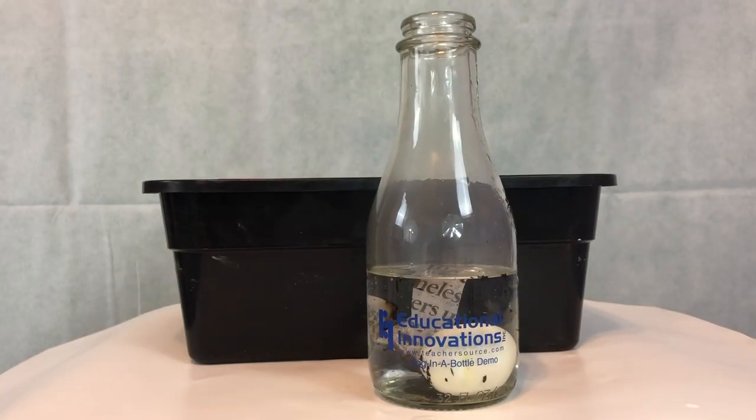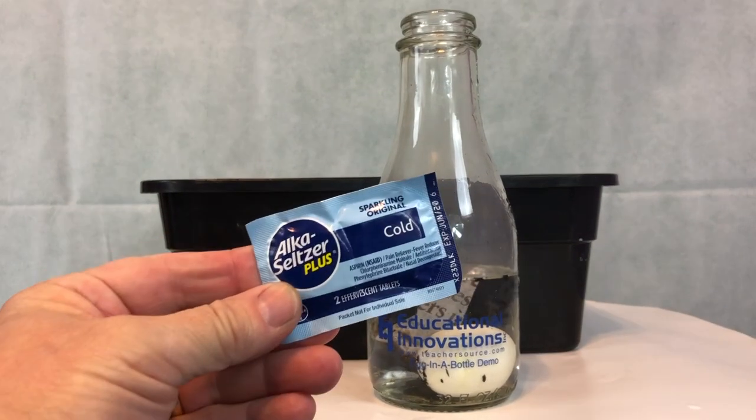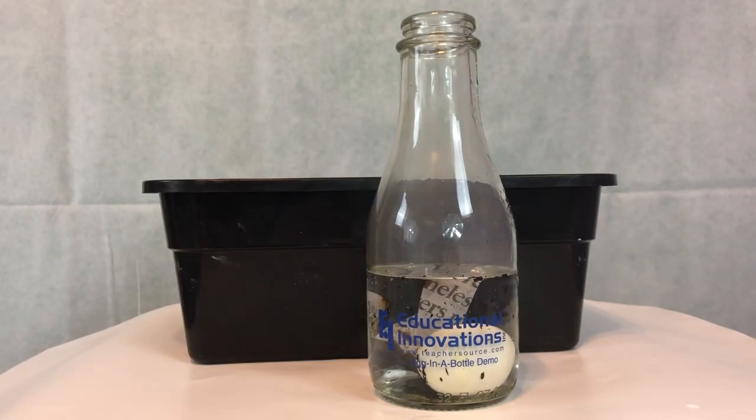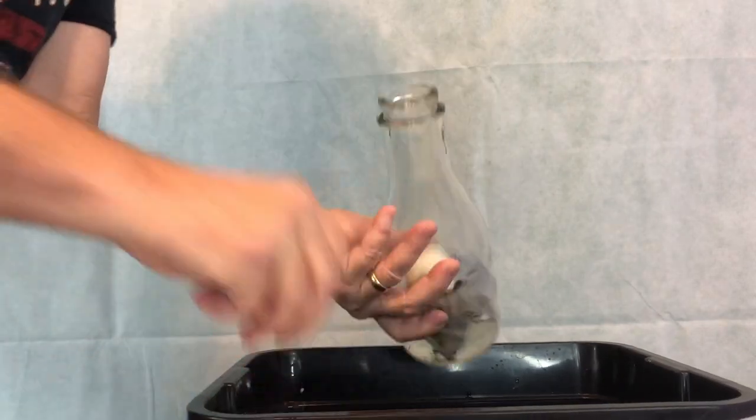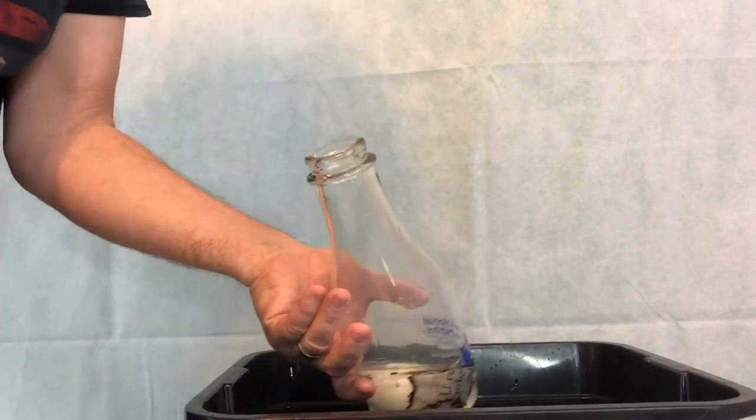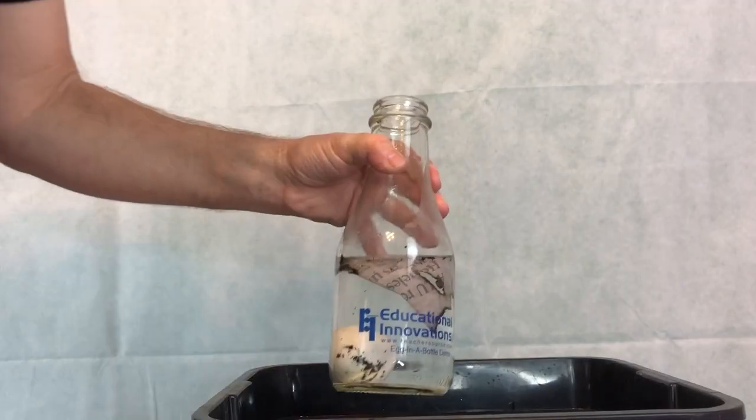So what we're going to do is we're going to take an Alka-Seltzer tablet. You can put two of them in there to speed up the process, but I'm going to put one in. You put one in, you got to turn it over quick. Oh, and the tablet came out. So that will not work. You need the tablet to stay in. So that's part of the trick.